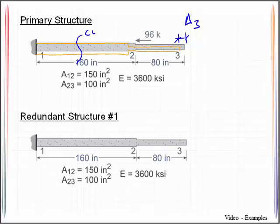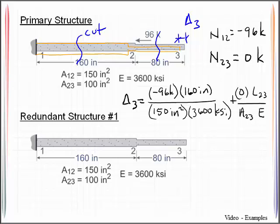The way I would do that is I would make a cut and sketch a free body diagram of this. If I made that cut there, I would find out that the internal axial force in bar 1-2 was equal to negative 96 kips. Then I'd have to come back and make a cut in bar 2-3, sketch a free body diagram, and I would find out that the internal axial force in that bar is zero kips. So I can actually compute that delta 3 with this particular equation.